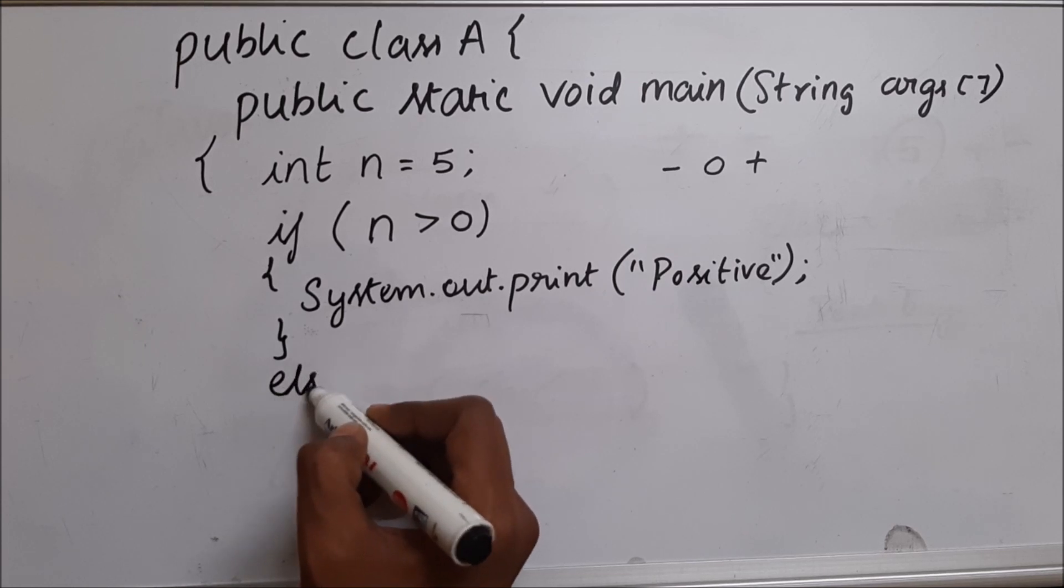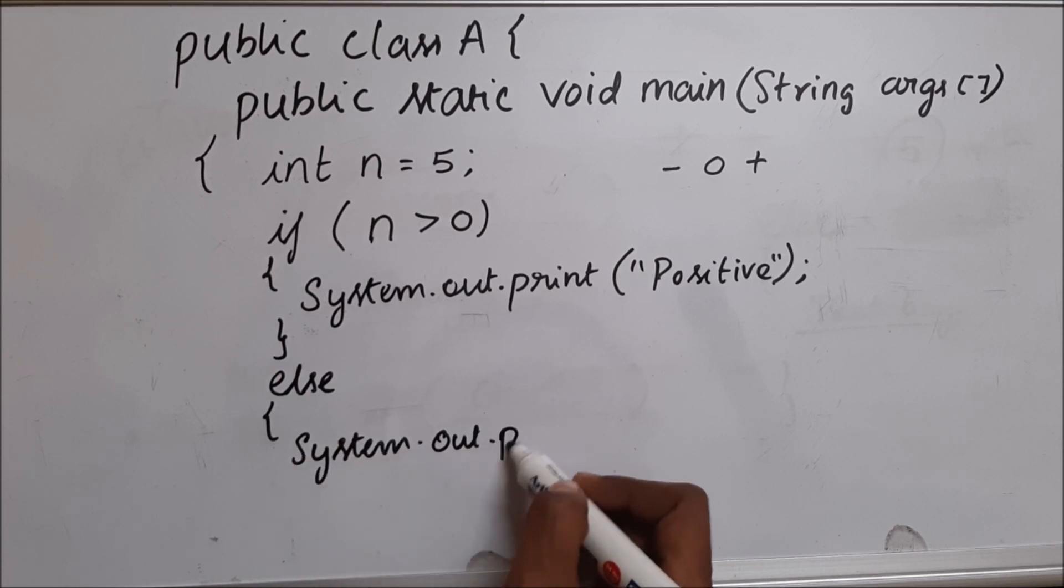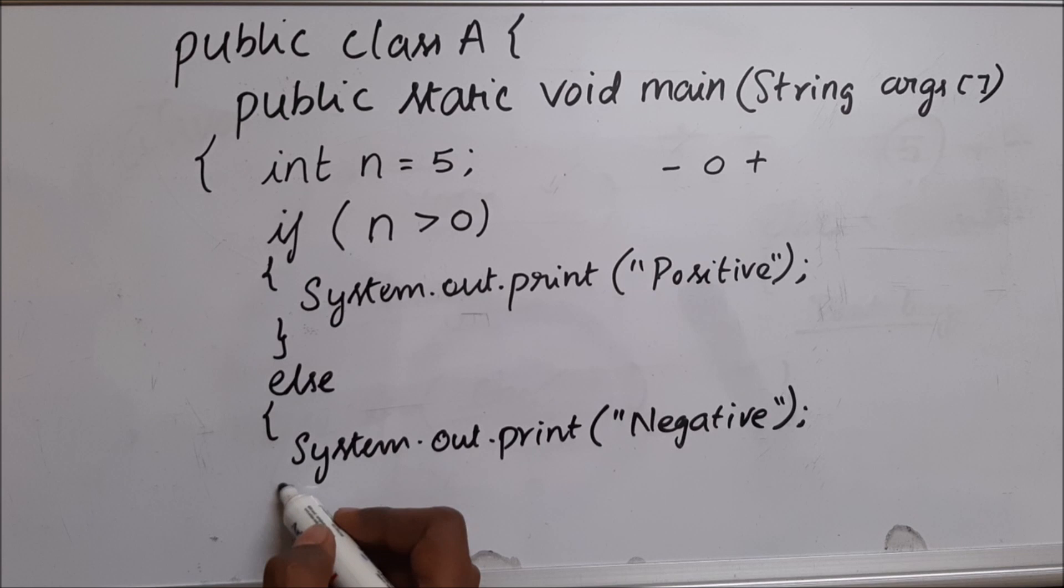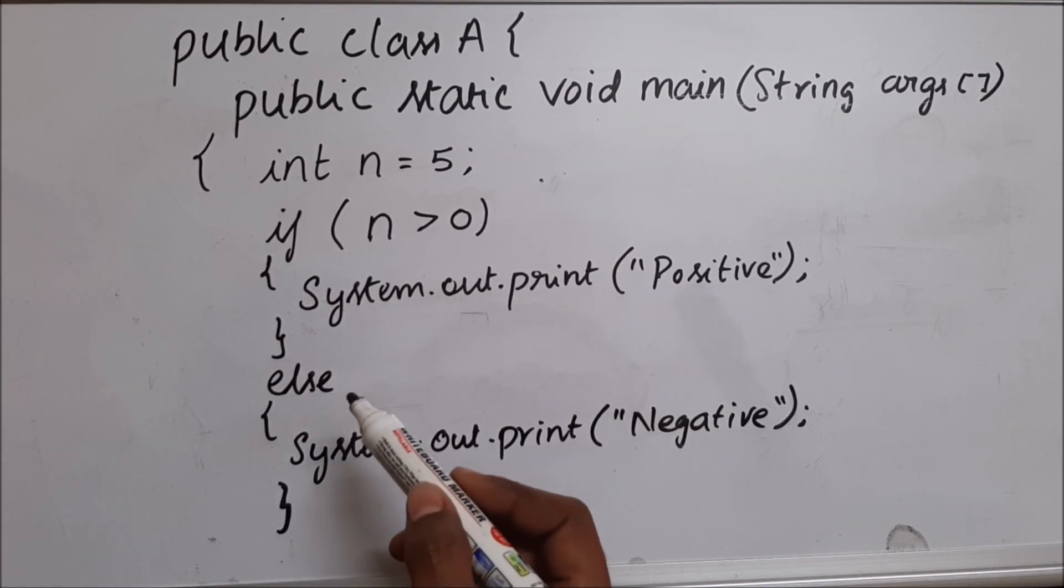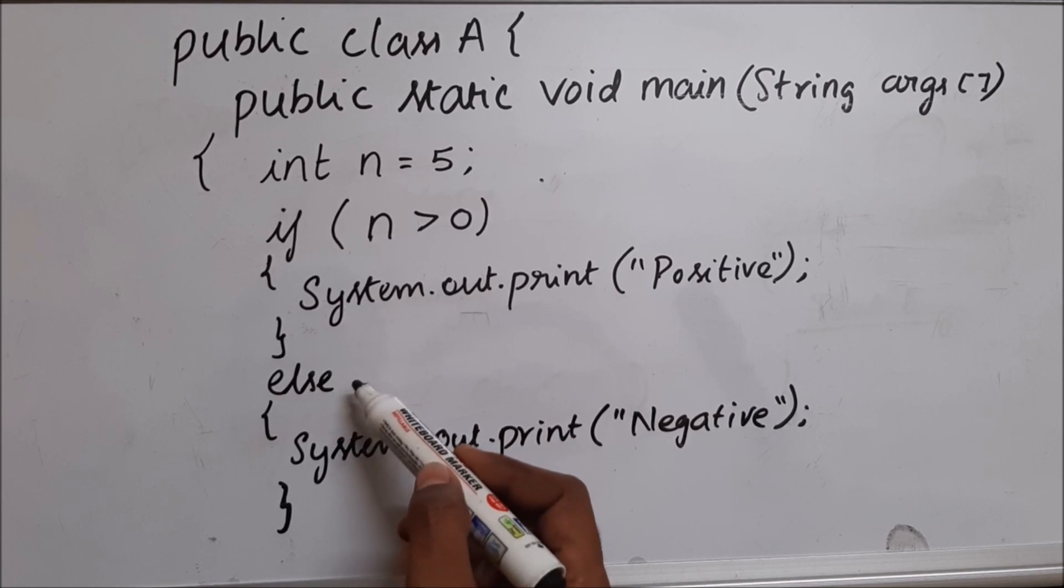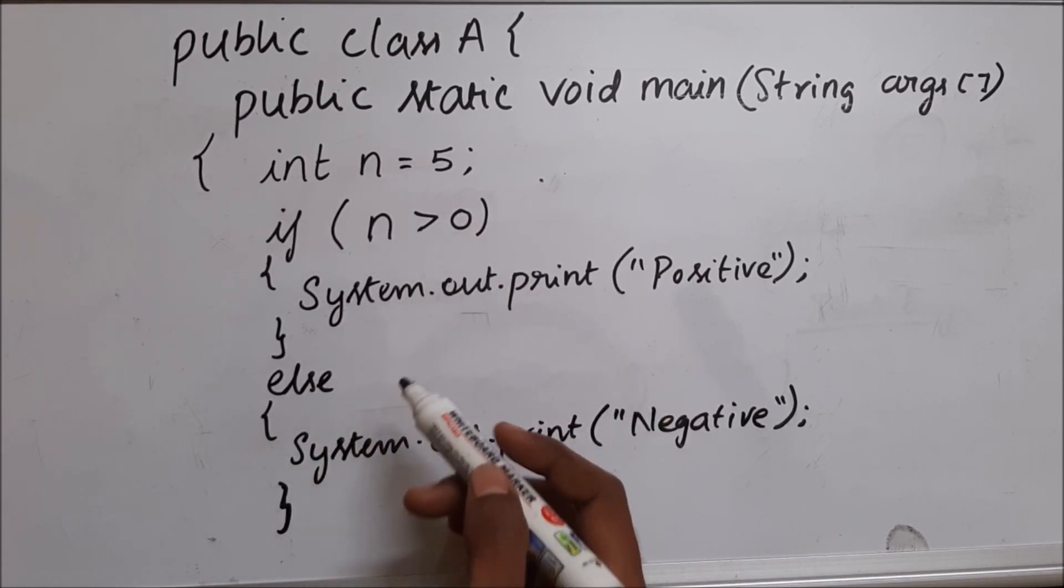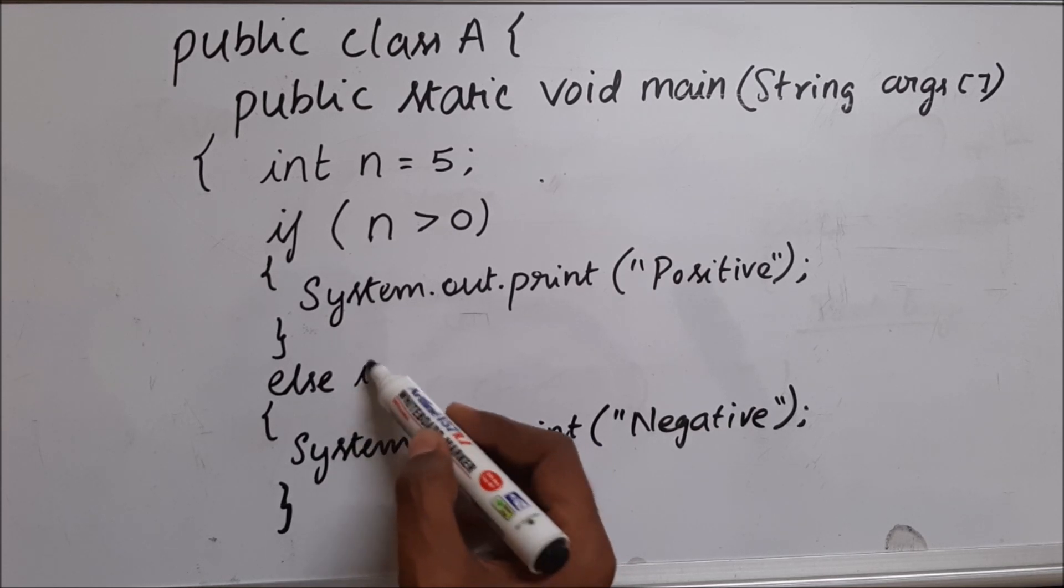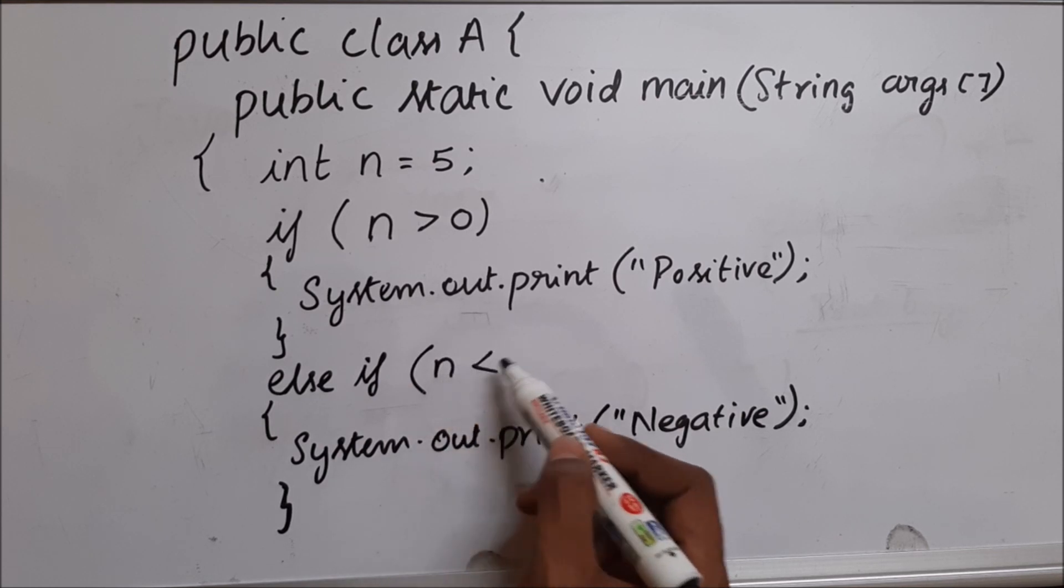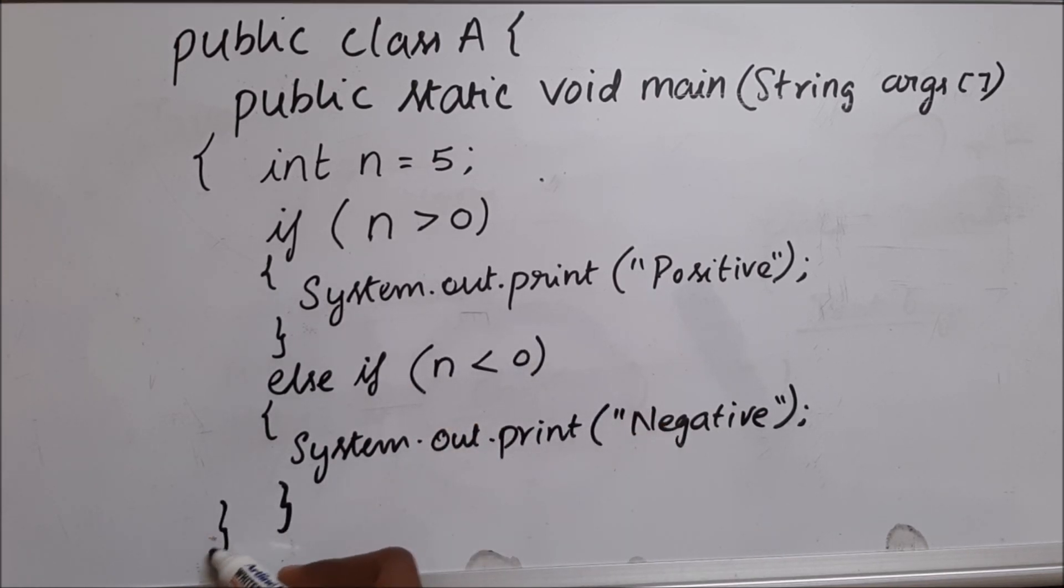I can do two things over here. I can use else and tell that it is... I can either use else, and if it's greater than zero... I will just close the program.